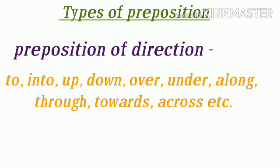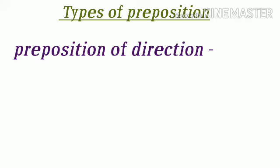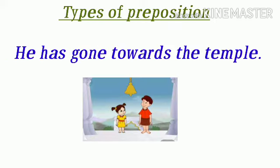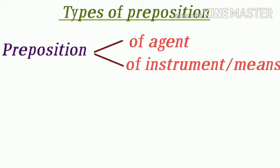Next है preposition of direction — वो preposition जो दिशा बताने के लिए यूज़ किये जाते हैं। इनके लिए preposition यूज़ होते हैं: to, into, up, down, over, under, along, through, towards, across, etc. ऐसे कई preposition हैं जो दिशा को निर्देशित करते हैं। जैसे: He has gone towards the temple — वह मंदिर की ओर चला गया है।